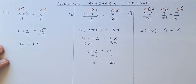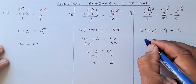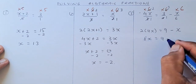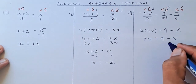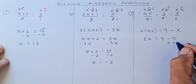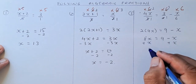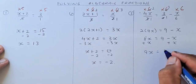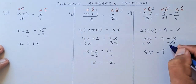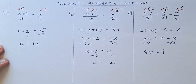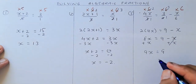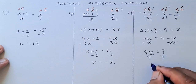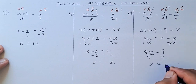Now simplify the equation: 8x equals to 9 minus x. Then plus x on both sides — 8x plus x gives 9x equals to 9, because x minus x is 0. Last step, divide by 9 on both sides: x equals to 1.